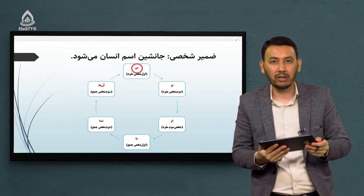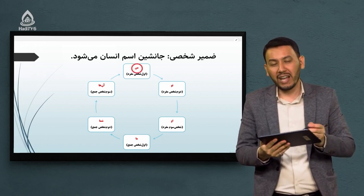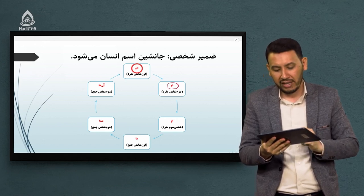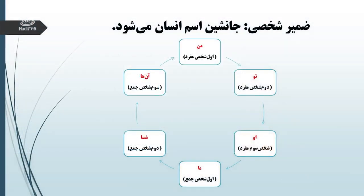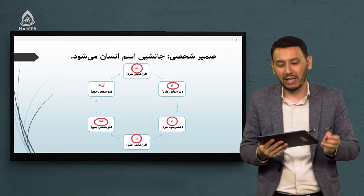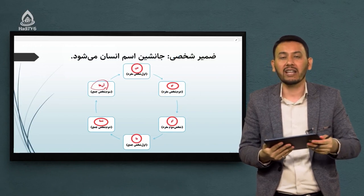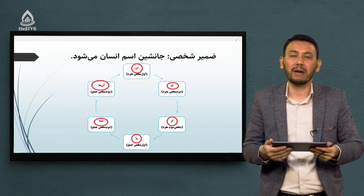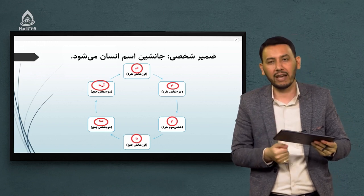اول شخص مفرد: «من». دوم شخص مفرد: «تو». سوم شخص مفرد: «او». اول شخص جمع: «ما». دوم شخص جمع: «شما». سوم شخص جمع: «آنها» - که در برخی موارد به جای «آنها» از «ایشان» هم استفاده میکنند.